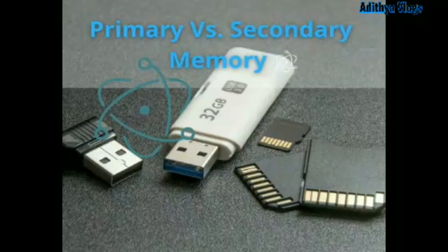Now for the vocabulary and full forms: CPU stands for Central Processing Unit. RAM stands for Random Access Memory. ROM stands for Read Only Memory. Key terms include: Primary memory, Secondary memory, Hard disk, Floppy drive, and USB Flash Drive.